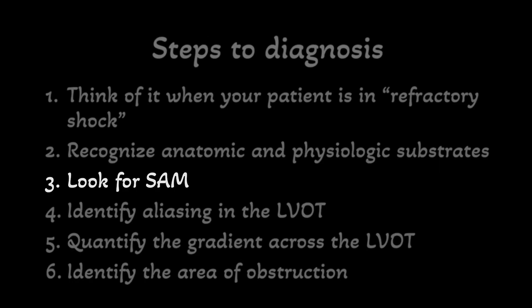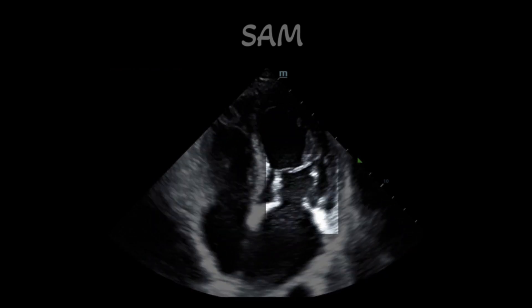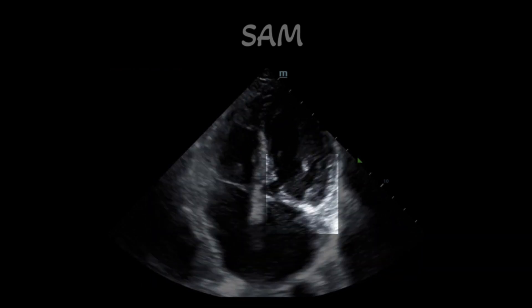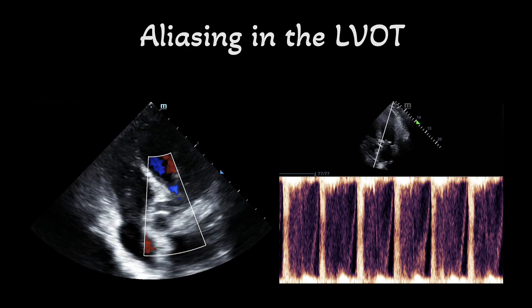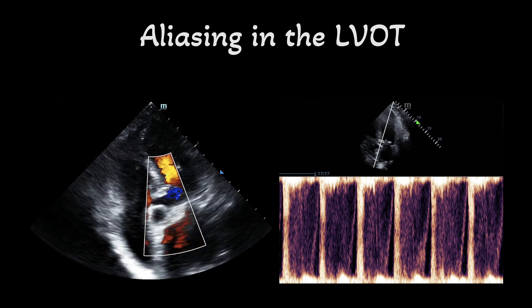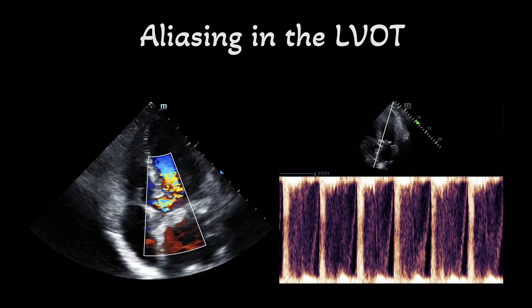Next, look for evidence of systolic anterior motion of the mitral valve leaflets. Pay close attention to the mitral valve leaflets in this clip — notice that during systole, the mitral valve leaflets swing toward the LVOT. Next, identify aliasing in the LVOT. Aliasing on pulse wave Doppler or color Doppler occurs when the speed at which blood is traveling exceeds 1.8 to 2 meters per second, confusing the Doppler signals so the ultrasound machine does not know which direction or how fast blood is moving. On color Doppler, aliasing appears as light blue and yellow flow through the LVOT. On pulse wave Doppler, aliasing in the LVOT demonstrates lines without a clear VTI waveform.